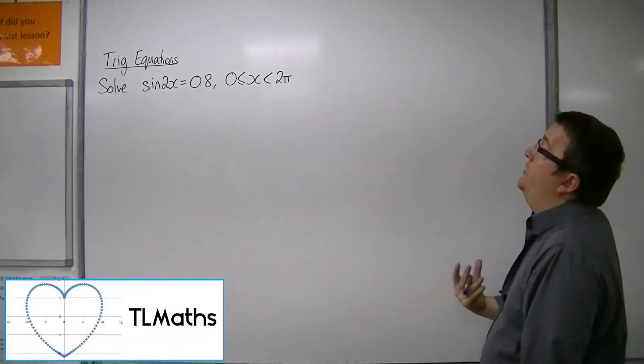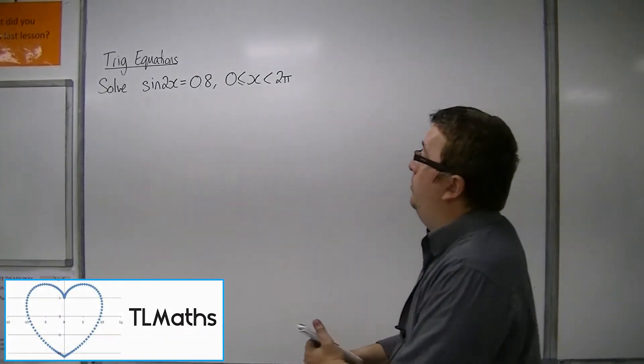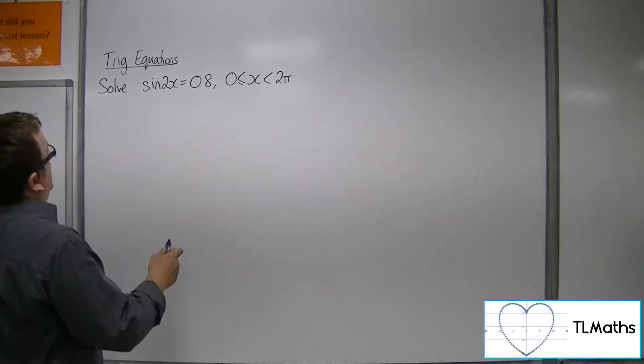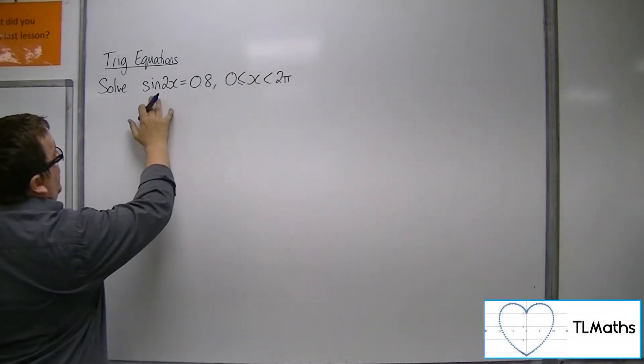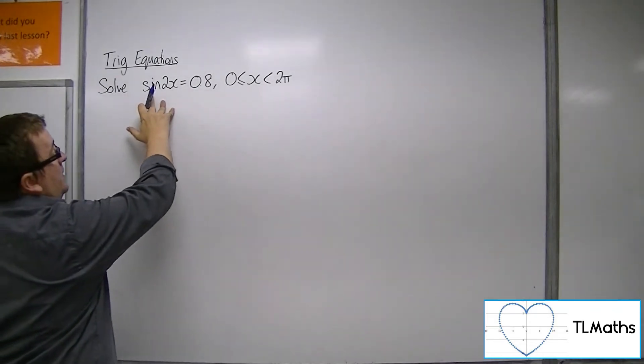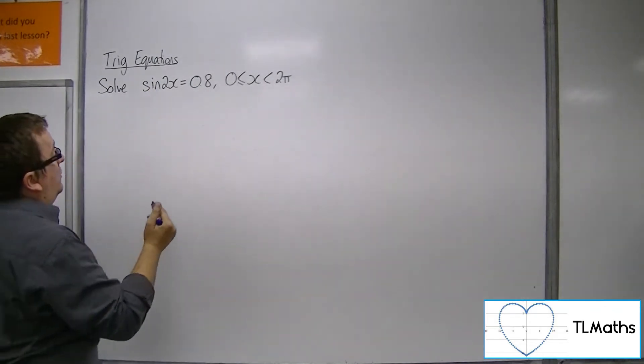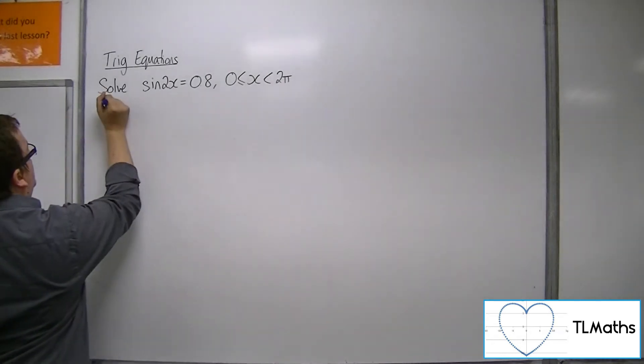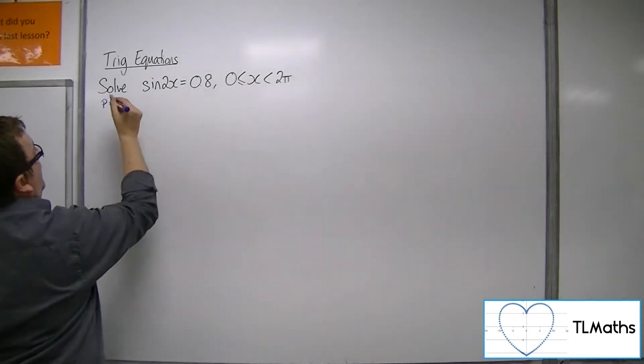So we're now going to solve sine 2x equals 0.8 between 0 and 2π radians. Because we've got sine of 2x, this is a transformation where it's been stretched by factor a half parallel to the x-axis. So now the period of the function isn't 2π, it's π.